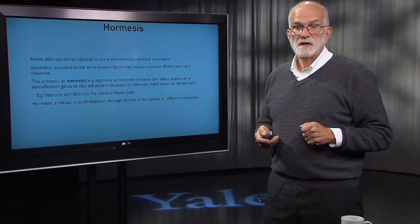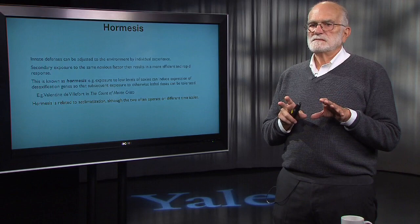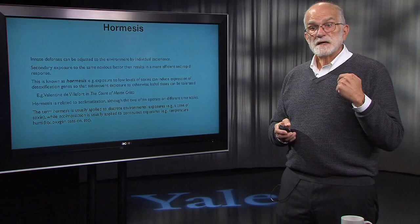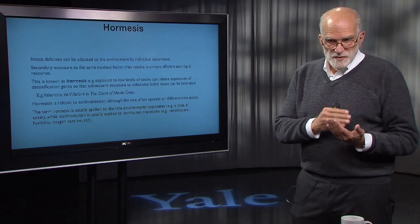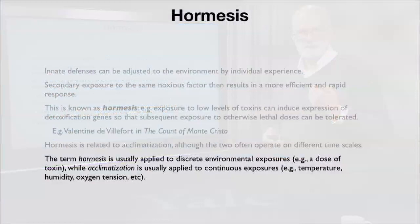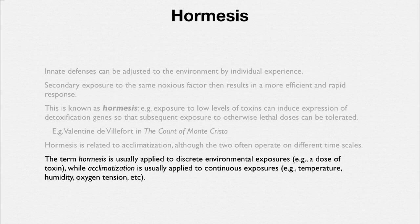Hormesis is something like acclimation, but they operate on different timescales. Hormesis is usually applied to a discrete exposure — you get a dose of poison — whereas acclimation is applied to continuous exposure, such as temperature gradually getting colder and physiological acclimation to that trend. Oxygen tension increasing or decreasing as you go up or down a mountain causes various physiological mechanisms to kick in, giving you better red blood cell supply or changing other aspects of dealing with oxygen tension.